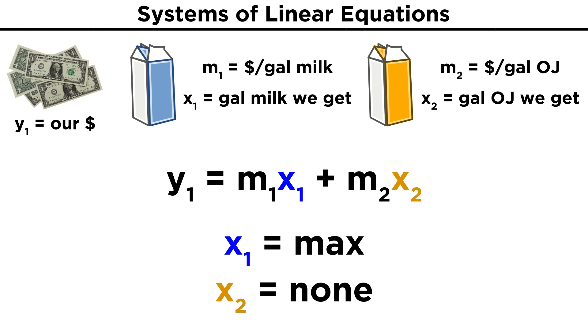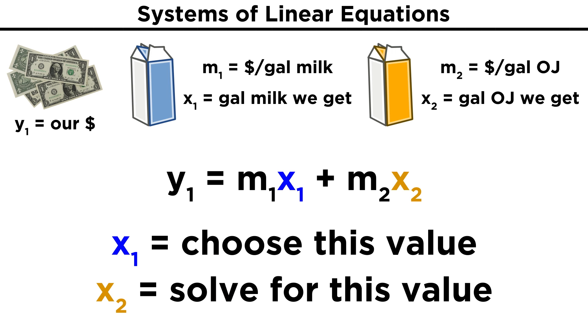We could buy no orange juice and lots of milk, or we could buy no milk and lots of orange juice, or more likely, we could buy some combination of milk and orange juice, but we can choose any value for one of these and then calculate the other.